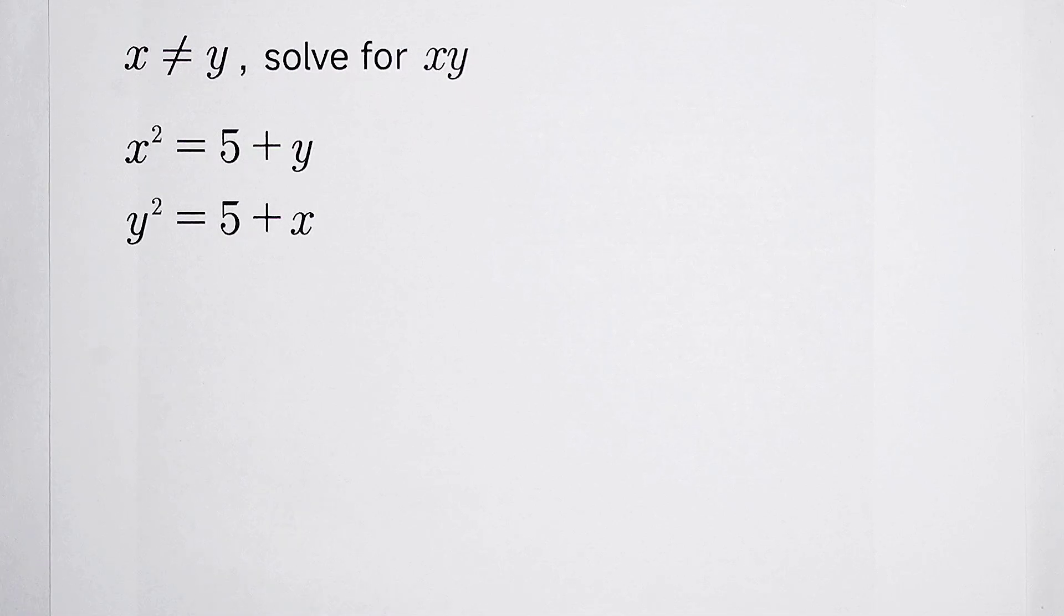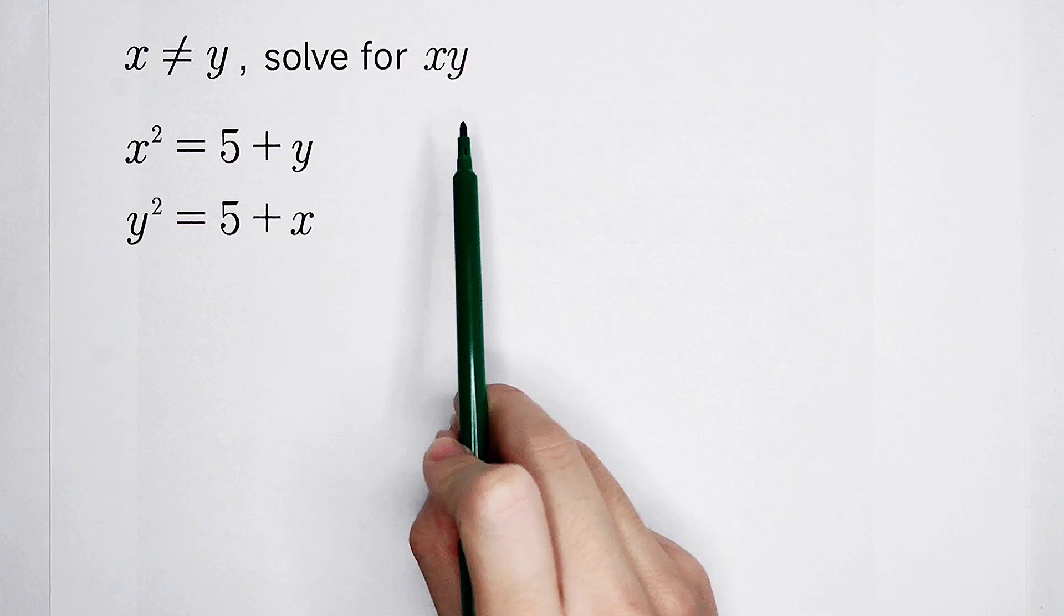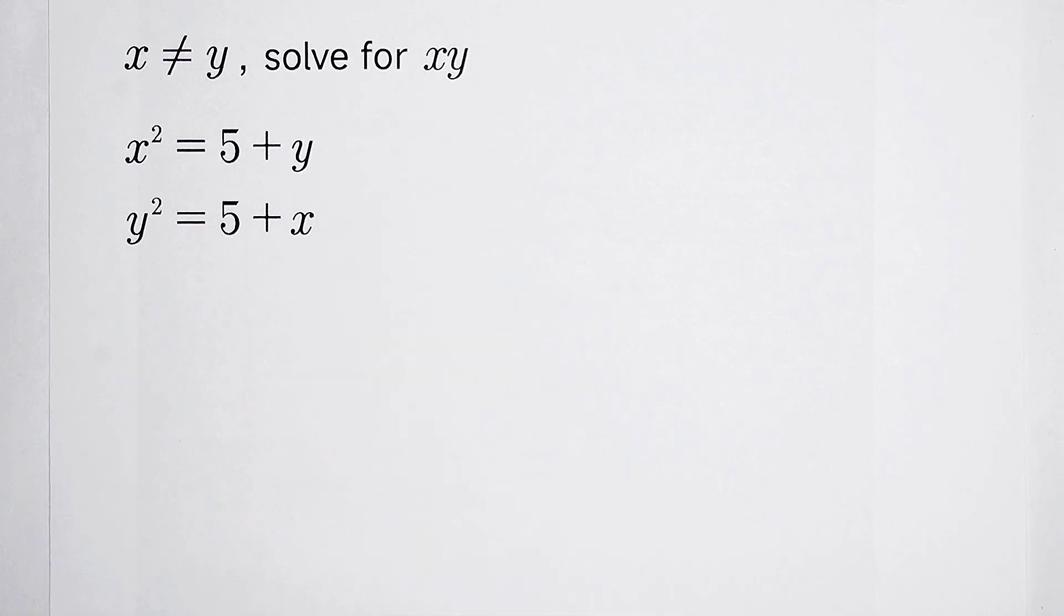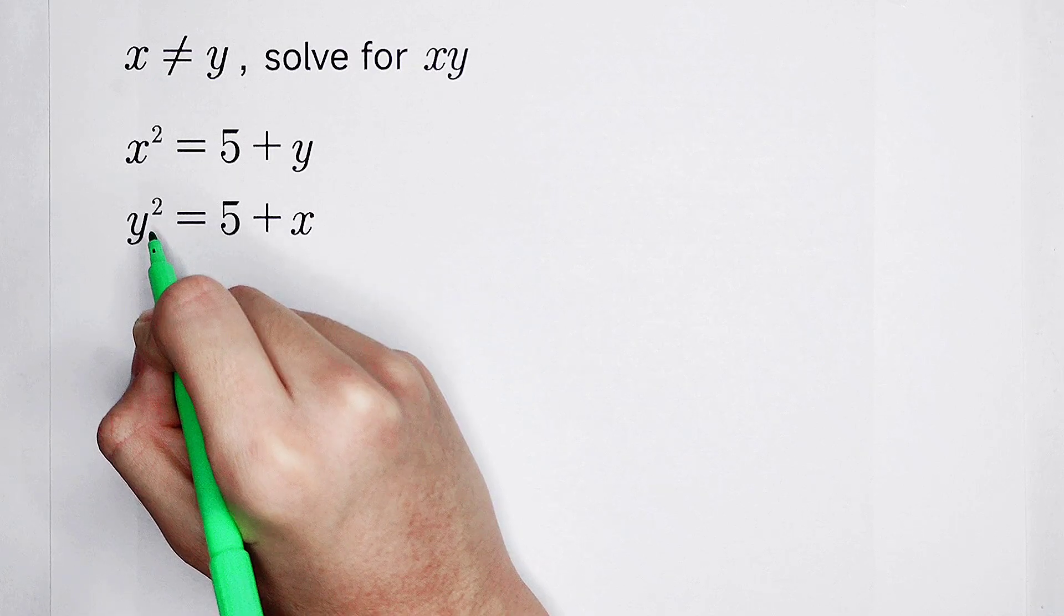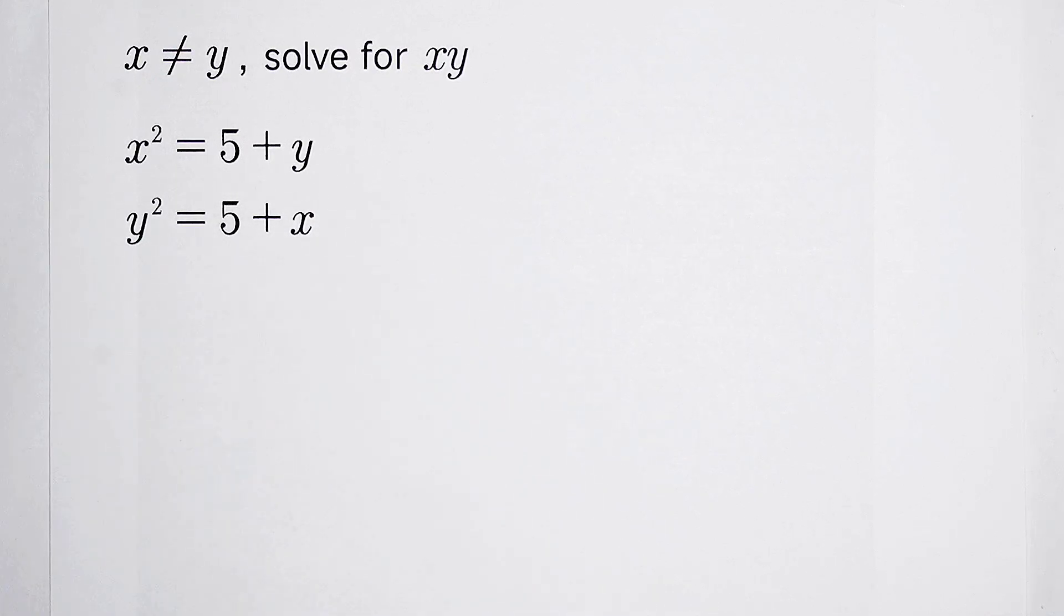So, for dealing with the value of product of x times y, you should notice squared squared. If they appear squared, maybe we can use this formula: a squared minus b squared equals a plus b times a minus b.